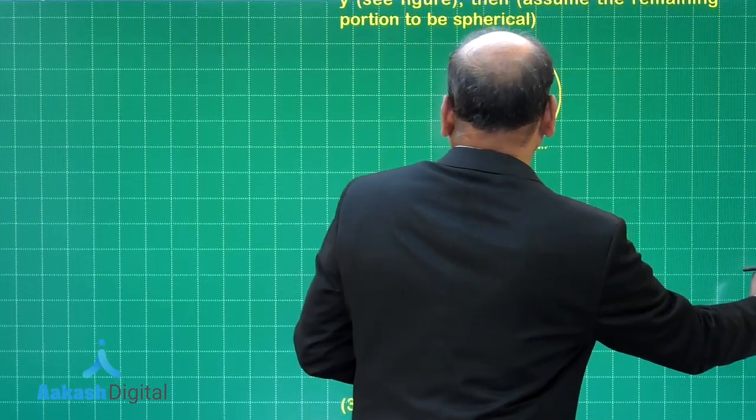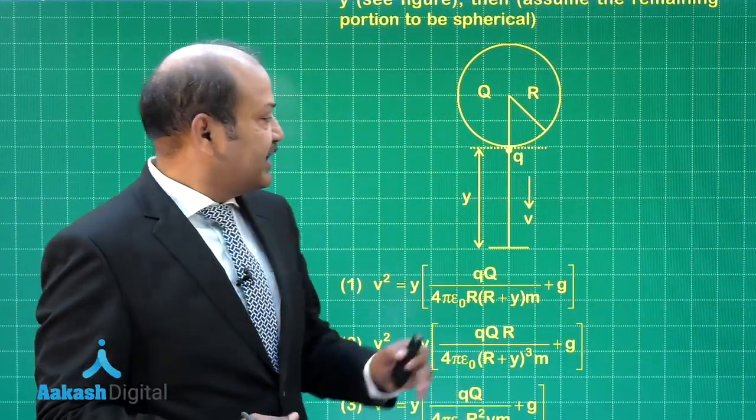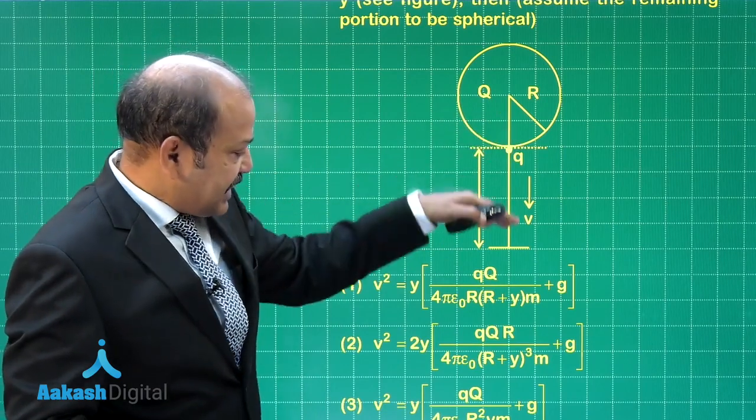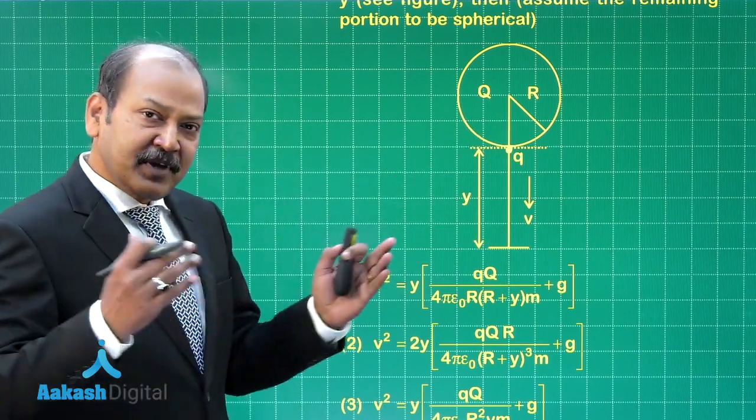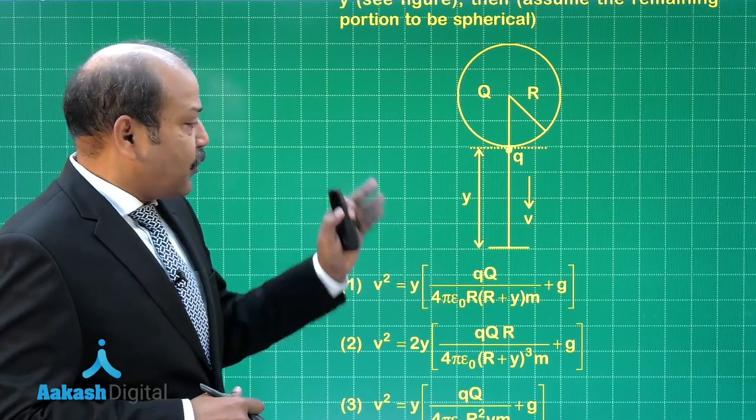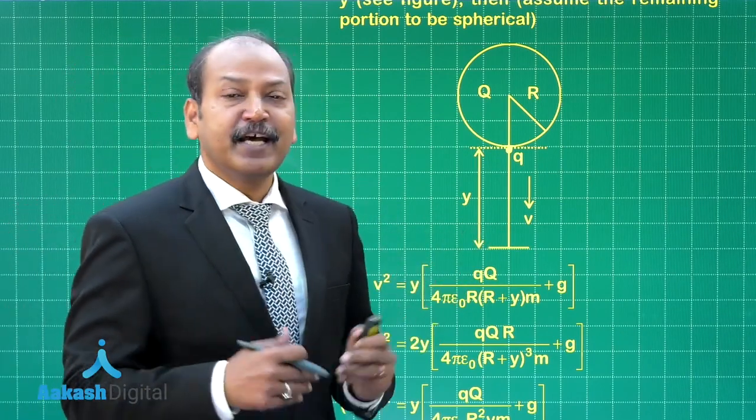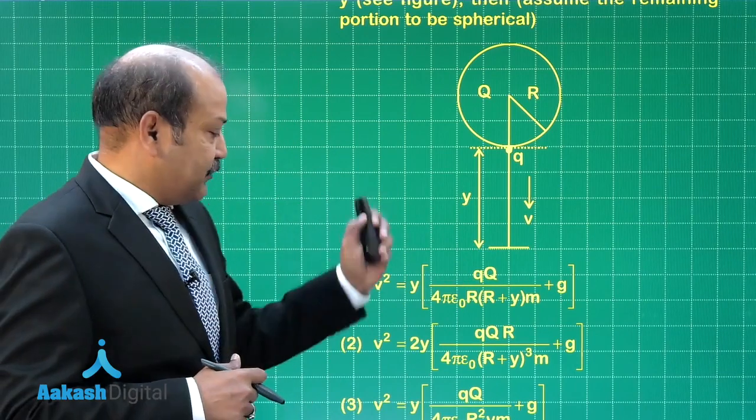The diagram is something like this. The particle gets detached from here, and as it moves through distance y vertically under gravity, what is the expression for the speed it acquires? Four options are given.